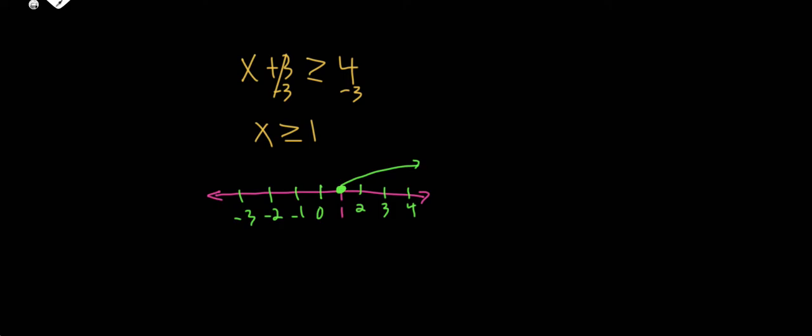All right, let's do one more. Let's say we have negative 2x plus 4 is greater than 10. So this right here is a two-step inequality.